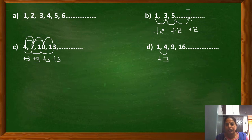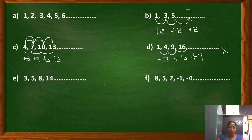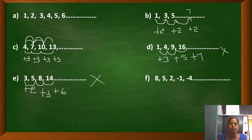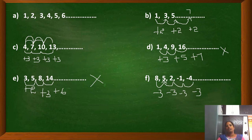Another non-example: 3, 5, 8, 14 — from 3 to 5 is plus 2, from 5 to 8 is plus 3, from 8 to 14 is plus 6. The differences are not equal, so this is not an AP. Now consider 8, 5, 2, -1, -4 — here the terms are decreasing. From 8 to 5 we subtract 3, or equivalently add minus 3. So: 8 + (−3) = 5, 5 + (−3) = 2, 2 + (−3) = −1, −1 + (−3) = −4. This IS an arithmetic progression with common difference −3.